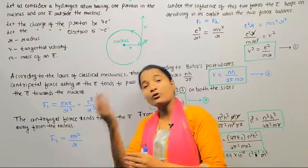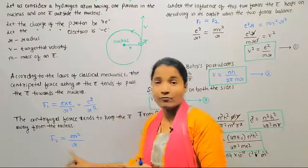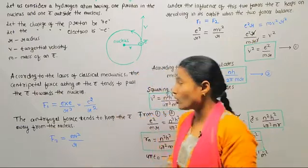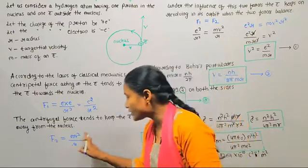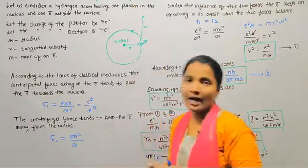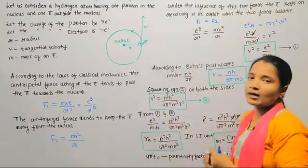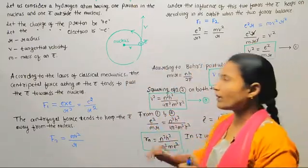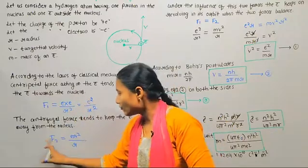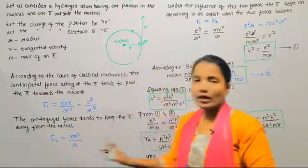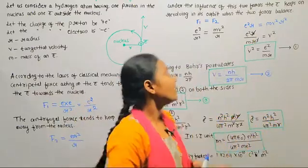So that gives us: F1 is equal to e square divided by R square, and F2 is equal to mv square divided by R.